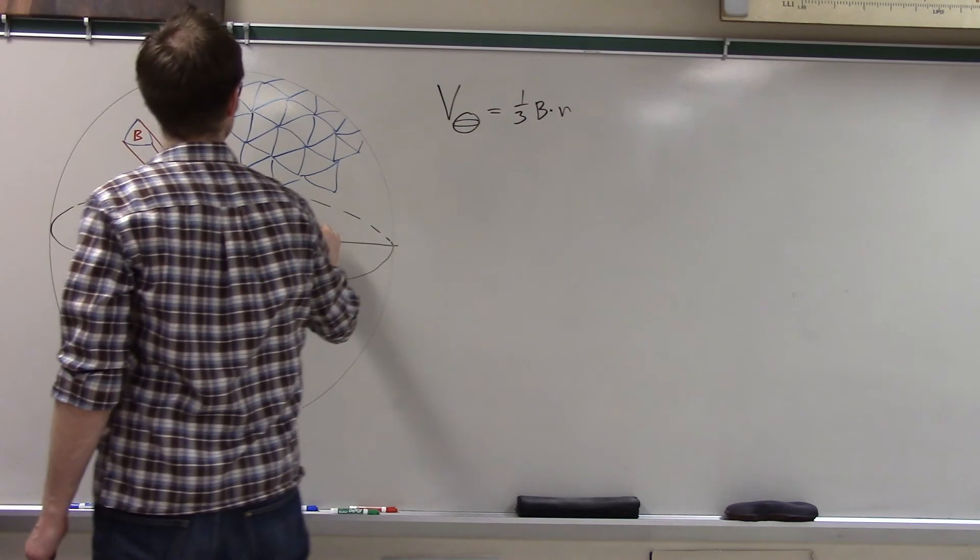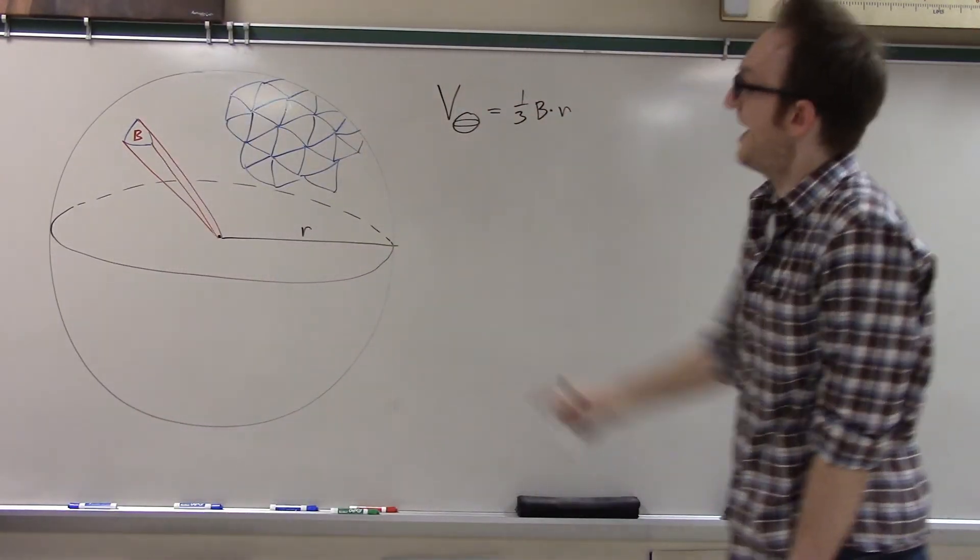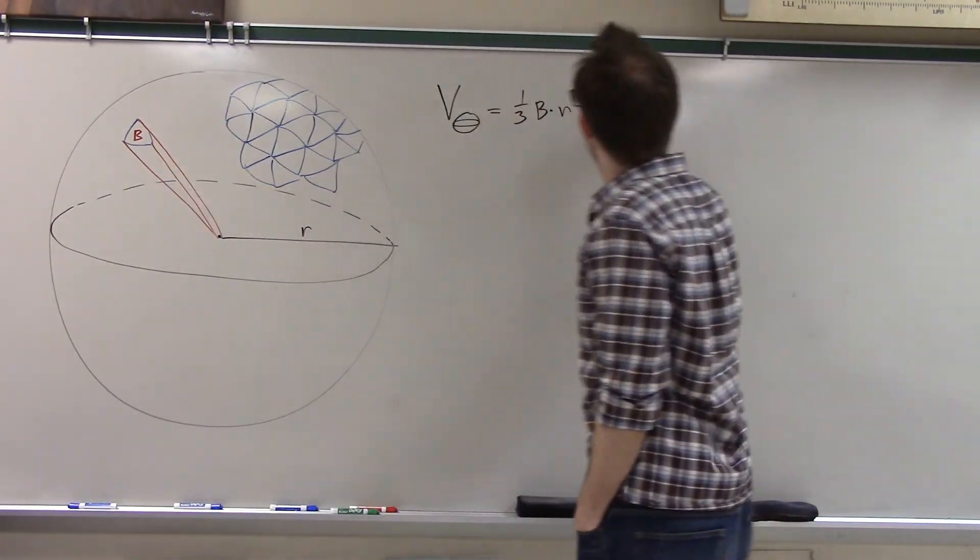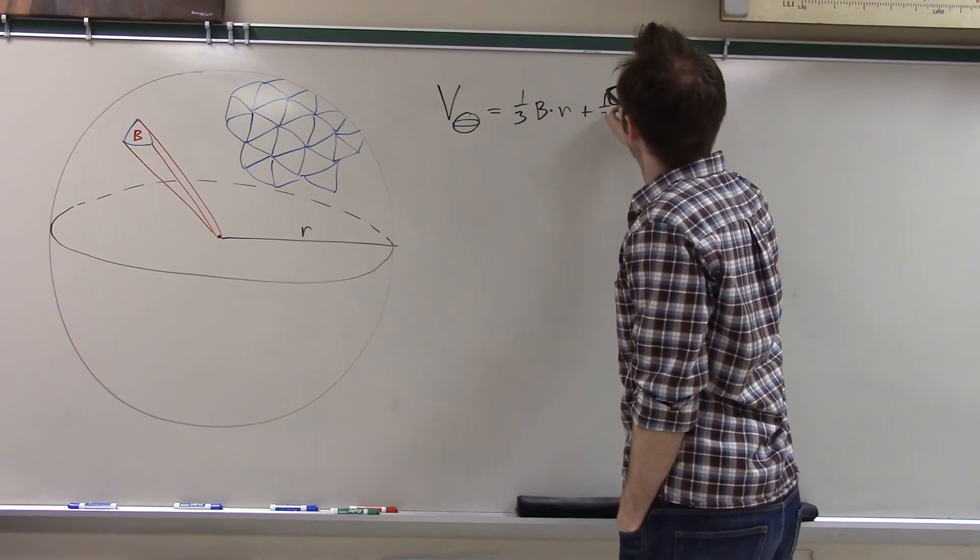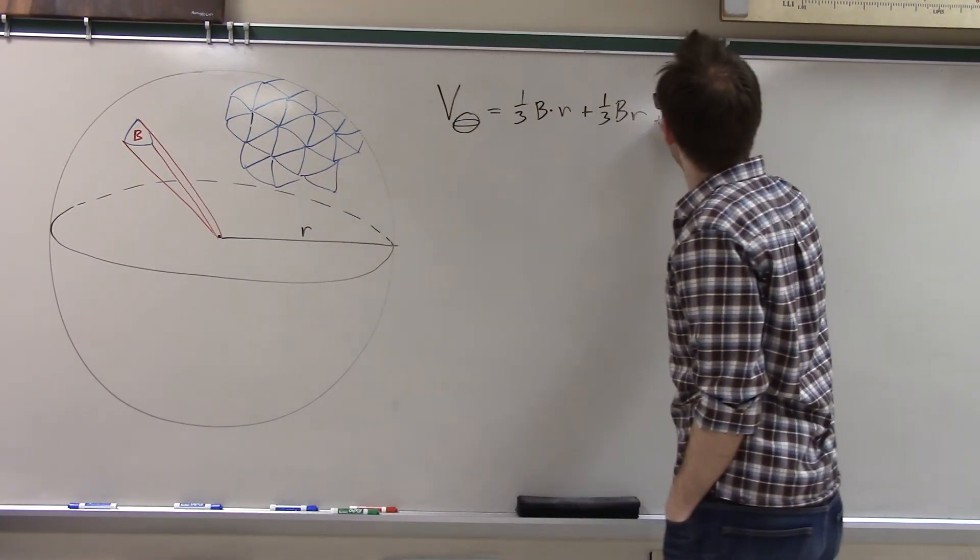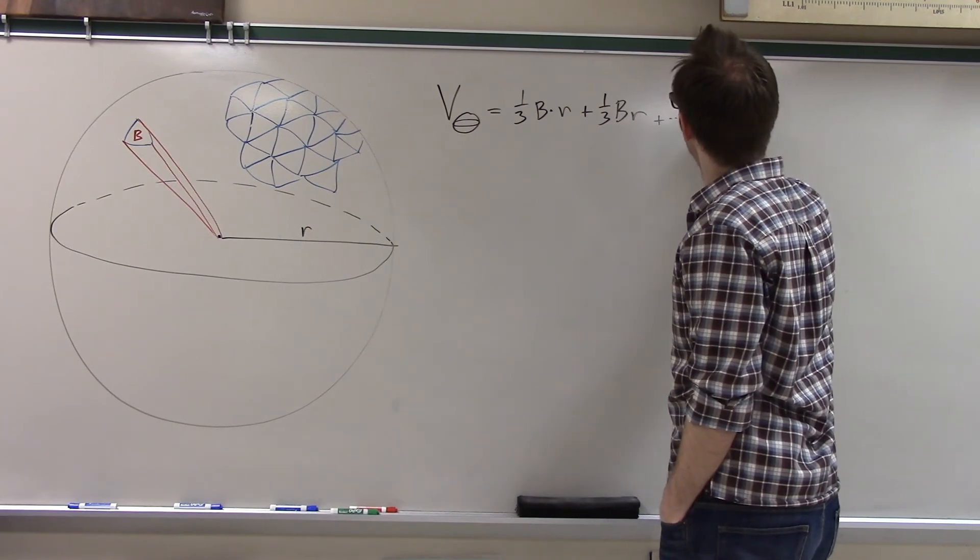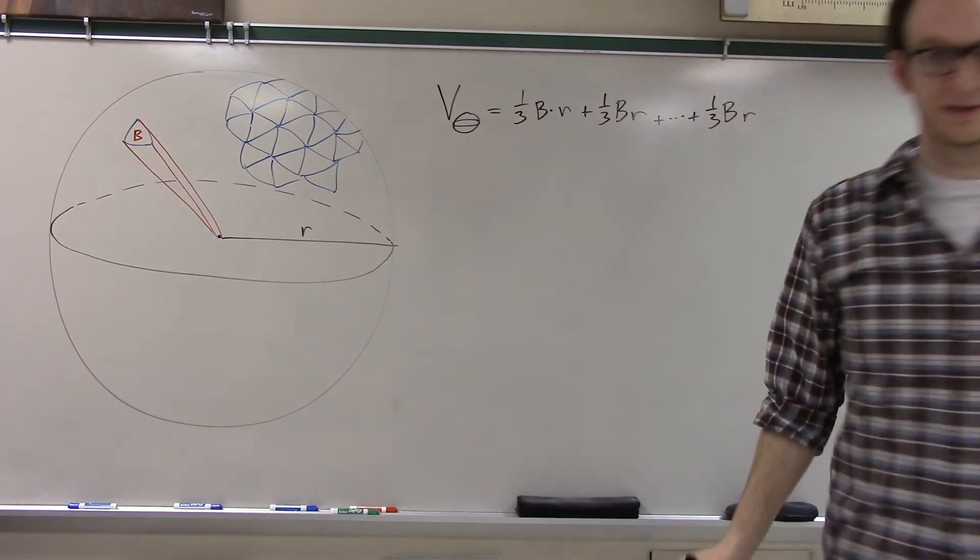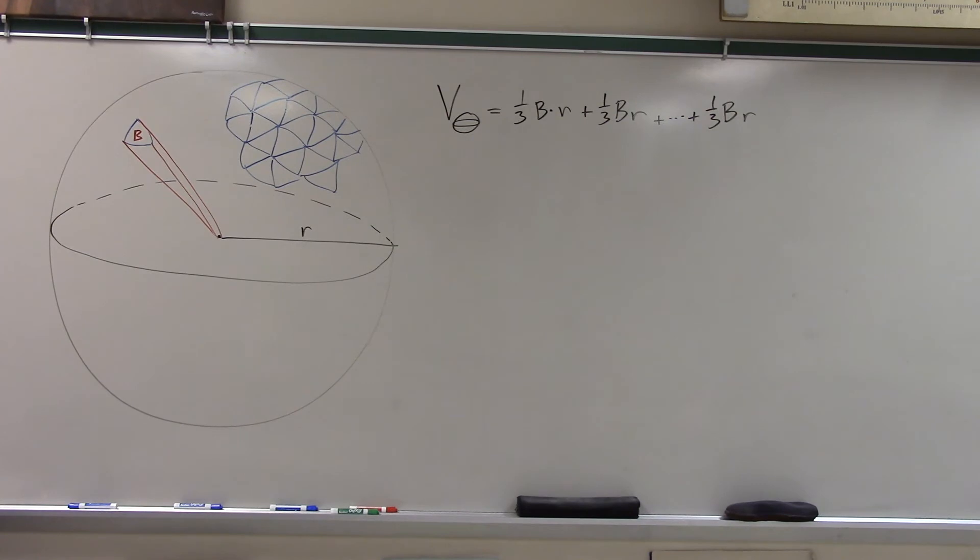We know how to find the volume of a triangular pyramid. It's one-third the area of the base times the height. And the height is r, the radius of the sphere. That's just one of them, right? And now we just have more of them, right? So another one-third br for the other guy and another guy. And so we have kind of a lot, a lot, lot, lot of these pyramids. Enough so that when we add them all up, we get the total volume.